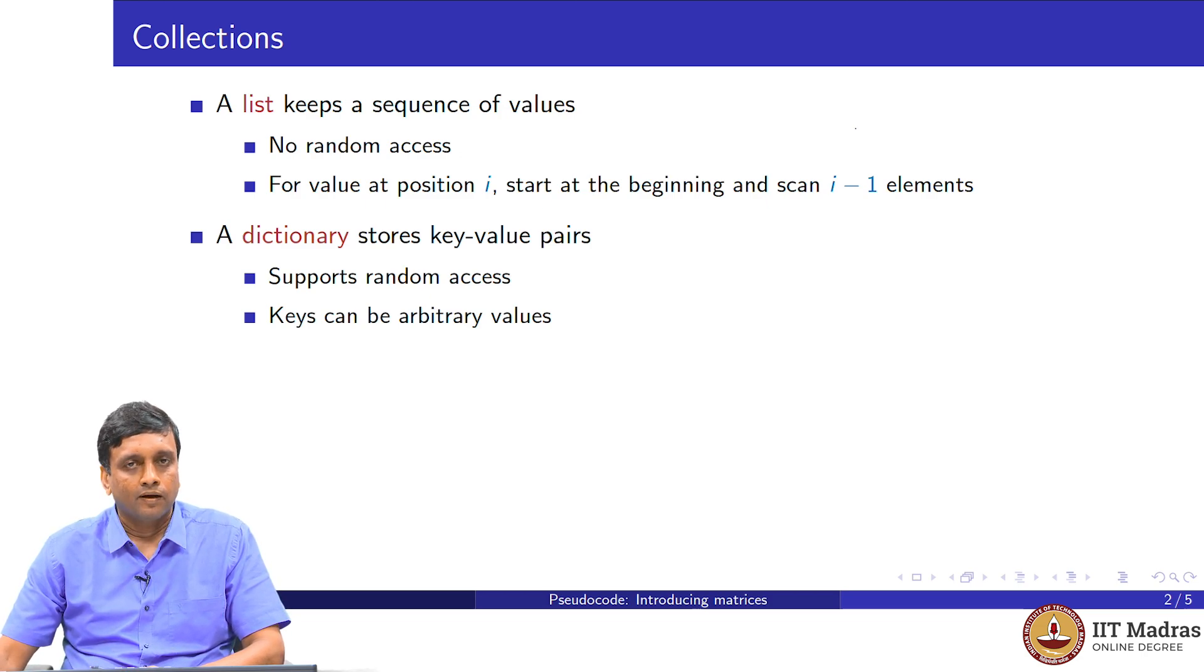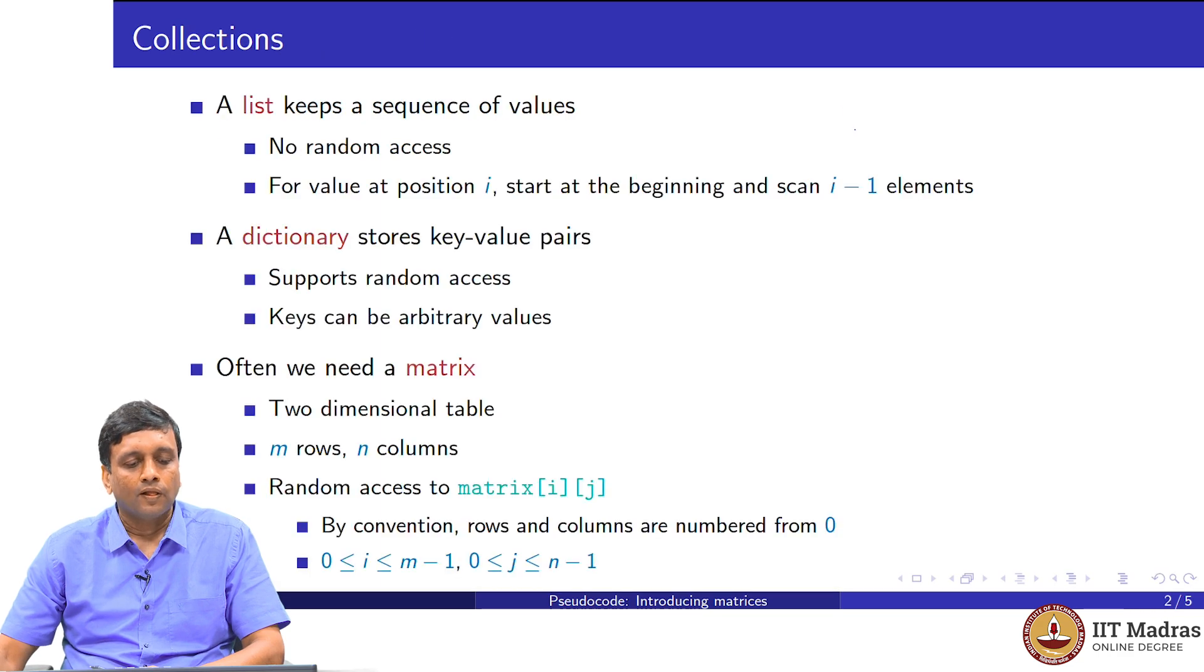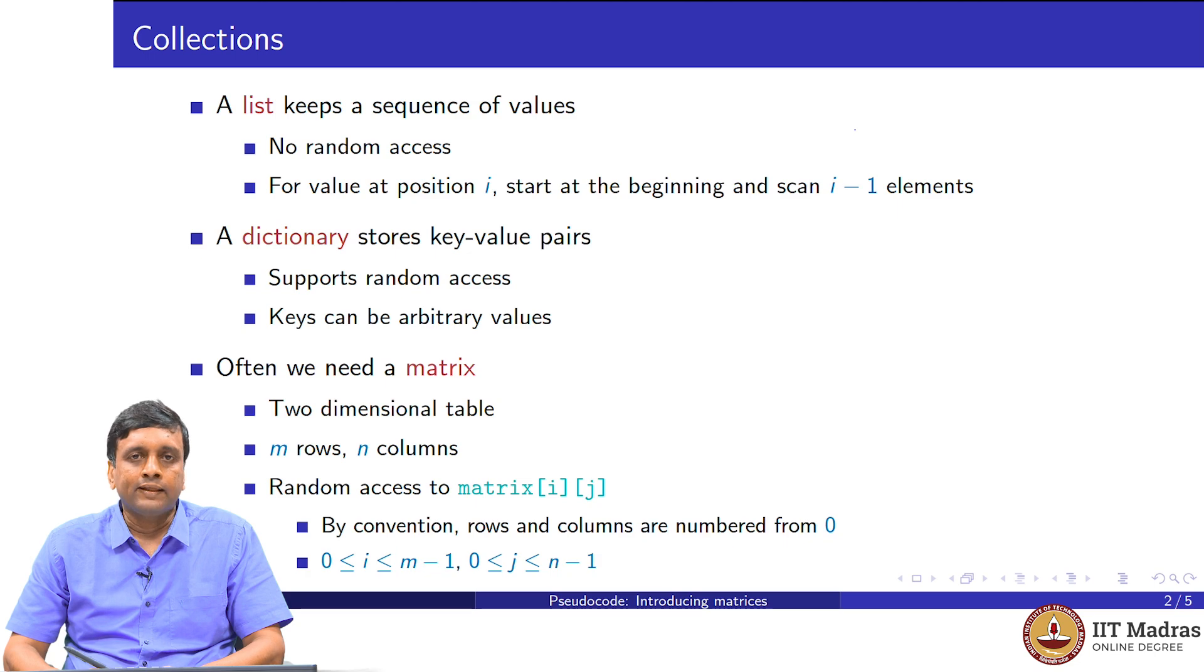Now we want a third type of collection, which we call a matrix. A matrix is what you would have seen in school. It is just a two-dimensional table with rows and columns. Each row is of the same length. In general, you may have m rows and n columns. The way that we will index these rows and columns is by using numbers from 0 to m minus 1 for the rows and 0 to n minus 1 for the columns.